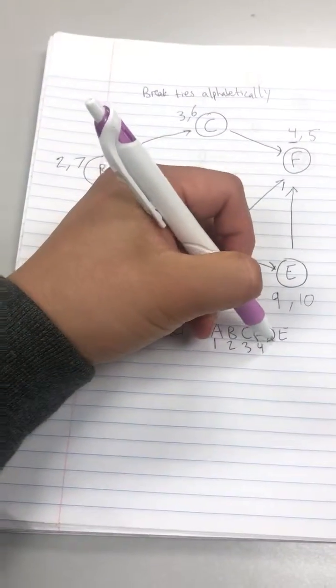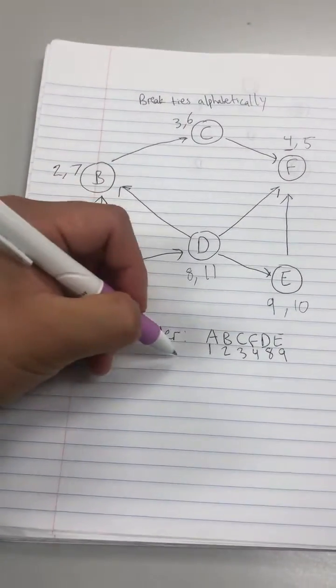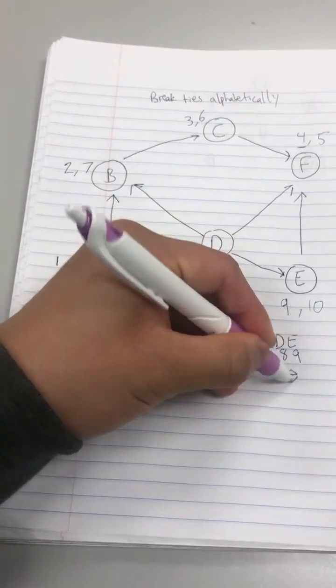D has eight, E has nine. As you see it's in increasing order this way. So this is good.